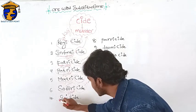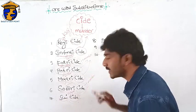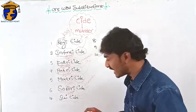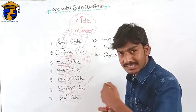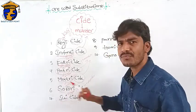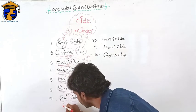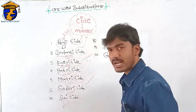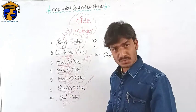Next one: suicide. You know, '-cide' means murder. Suicide means killing oneself. The killing of oneself is called suicide.